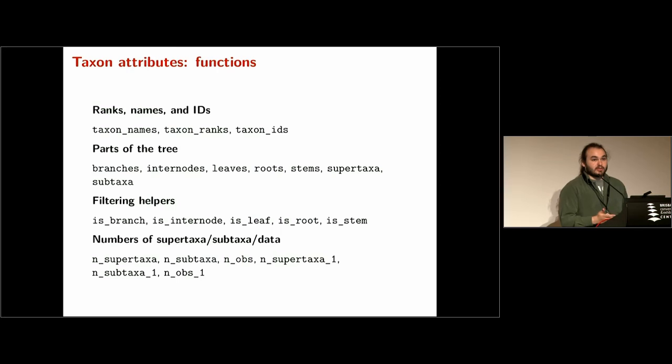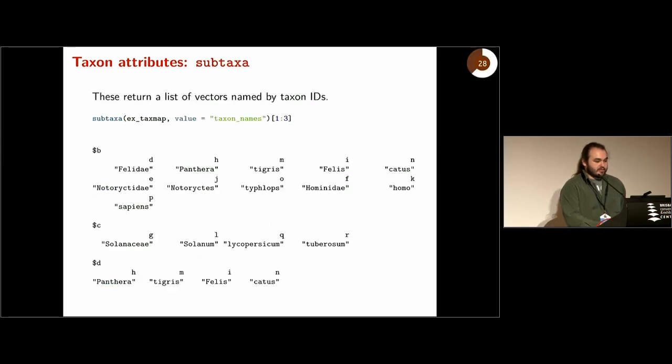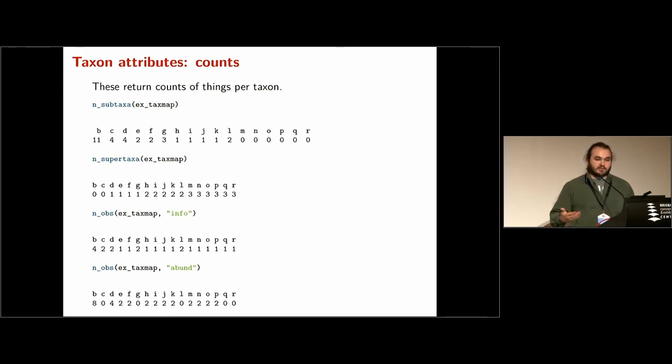And then things that return counts, like the number of subtaxa per taxon, the number of observations in a data set per taxon, recursively or non-recursively. Those ones that end in 'one' are the non-recursive variants. There's the simple ones that just return the names per taxon named by taxon ID. Ranks and IDs are similar. There's the subtaxa and supertaxa functions, which are quite flexible and useful - this is just their default usage. It returns all the subtaxa for every taxon. This is a list of vectors that you can loop over if you need to. If you say recursive equals false, you only get the immediate subtaxa. And there's the ones that return counts of things - number of subtaxa per taxon, number of observations in a particular data set per taxon. All these things are useful in plotting and filtering, and that's why they're there for the most part.